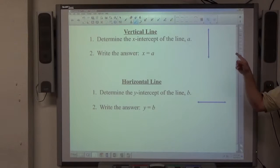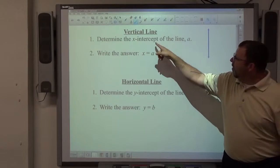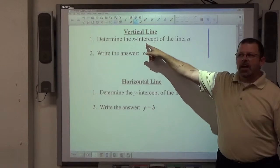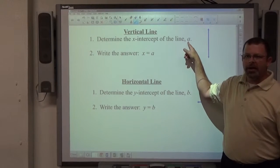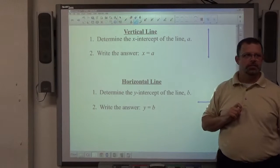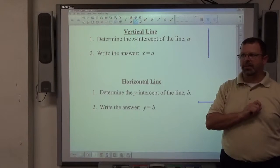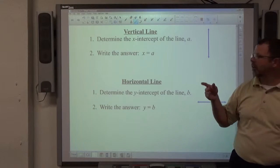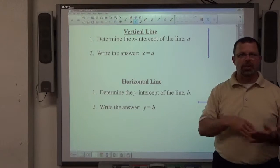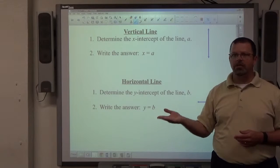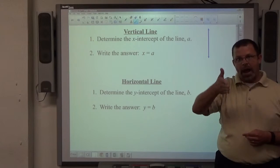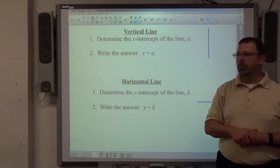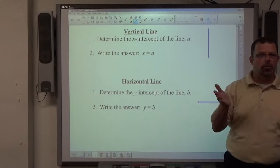If you see a vertical line, the x-intercept, where it crosses the x-axis, we're going to call A, the answer is x equals A. X equals is part of the equation, it must be written. If you just write A, you're wrong. If it crosses through 2, the answer is x equals 2. If it crosses through 7, the answer is x equals 7. If it's the y-axis, it crosses through 0, it's x equals 0. It's going to be x equals whatever number it crosses.